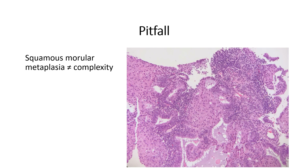The important thing about solid growth is that you should distinguish it from squamous morular metaplasia. Squamous morular metaplasia is most often seen in cases of EIN, atypical hyperplasia, or endometrioid adenocarcinoma. It's a type of squamous metaplasia where you form these little balls of non-keratinizing squamous cells. You cannot count squamous morular metaplasia as part of your architectural complexity — it would not count as solid growth, and you would not count it as merging glands. Everything in such a slide would still be consistent with atypical hyperplasia or EIN, not carcinoma.